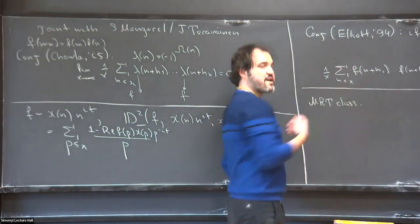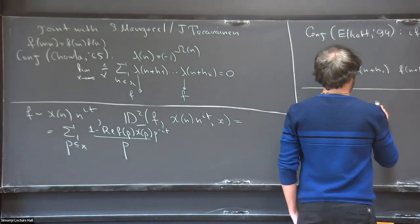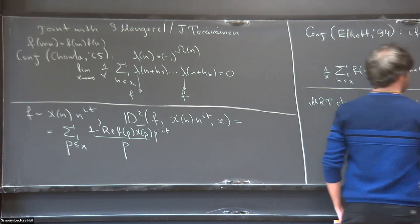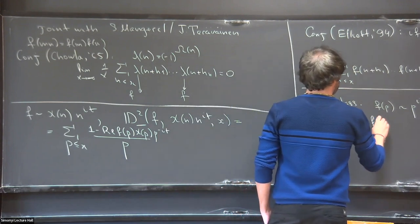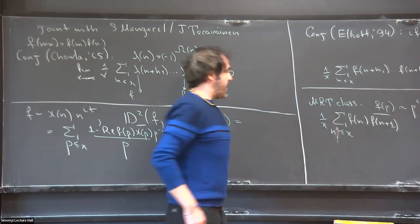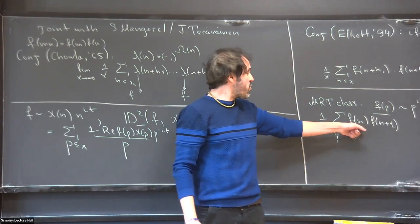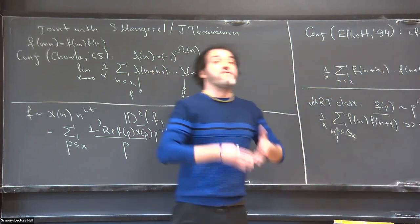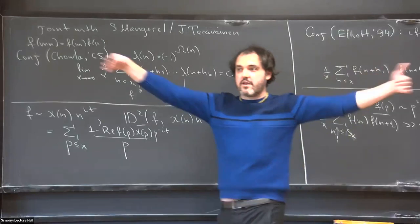The way to see that this is wrong is through what are now called the MRT class functions, pointed out by Matomäki, Radziwiłł, and Tao in 2015. The function f can behave like n^{it_k} at different scales, so f(p) can be p^{it_k} on the scale of s_k. If you look at this correlation at the scale of t_k and s_k, it will look like n^{it_k} times n^{i} times the conjugate — so it's going to be large.